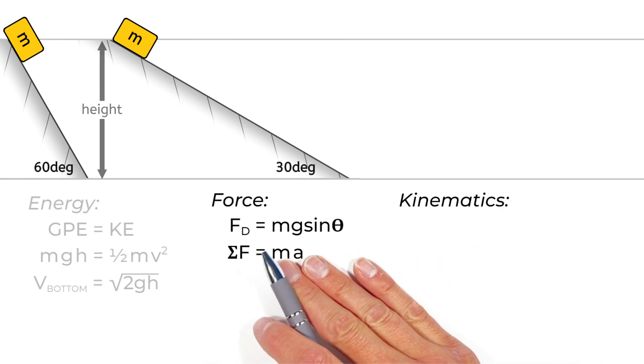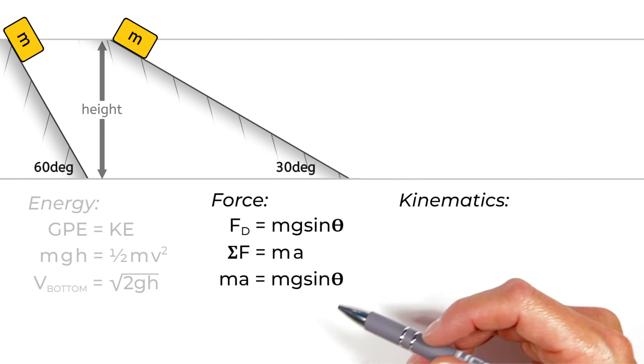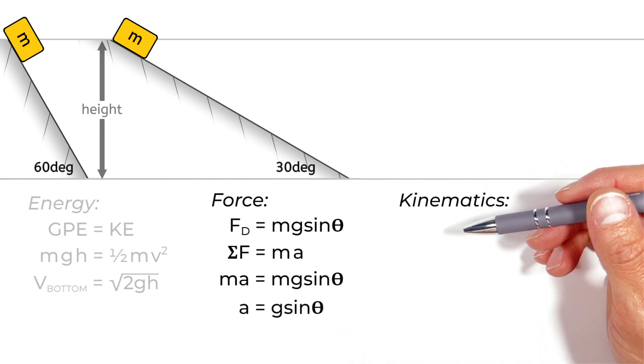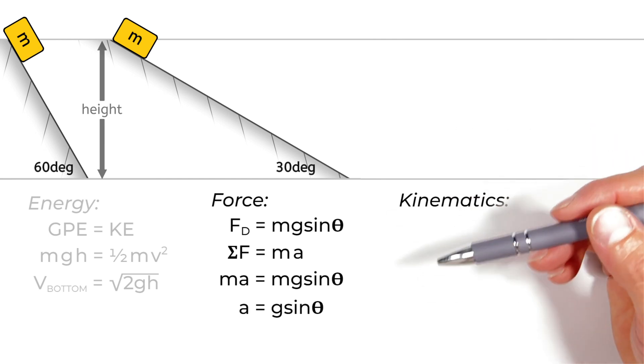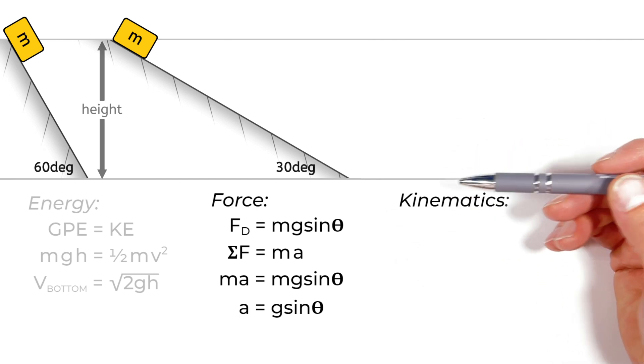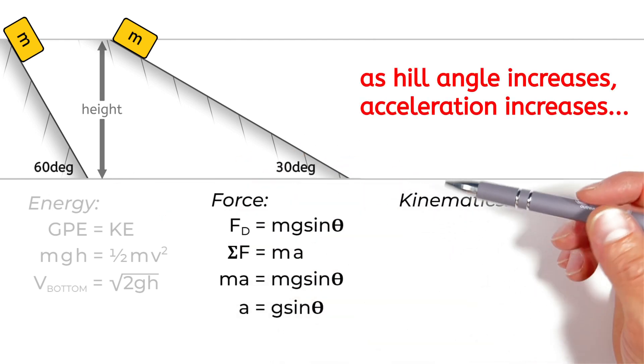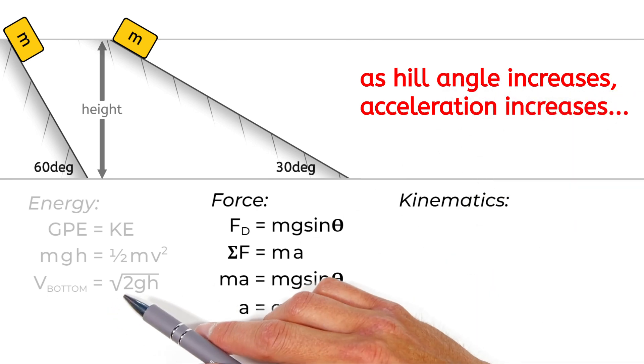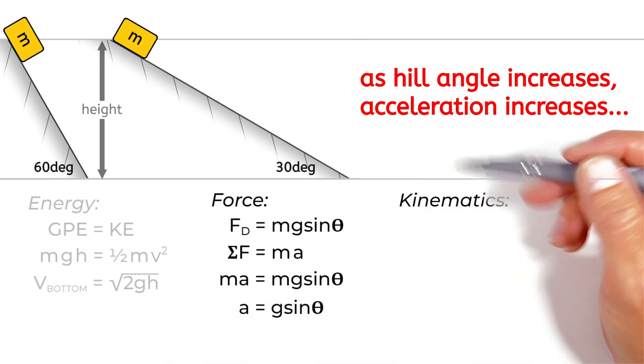So setting mg sine theta, the force down the hill, equal to ma, we find that the acceleration of the block down the hill is g sine theta. Now, this is just an equation, but if we stop and think about what it means, this matches up with what people understand intuitively. What this really is telling us is the steeper we make the hill, the greater the rate at which the block will accelerate, which at first seems to go against what this equation over here with energy is telling us. But there's more going on here.